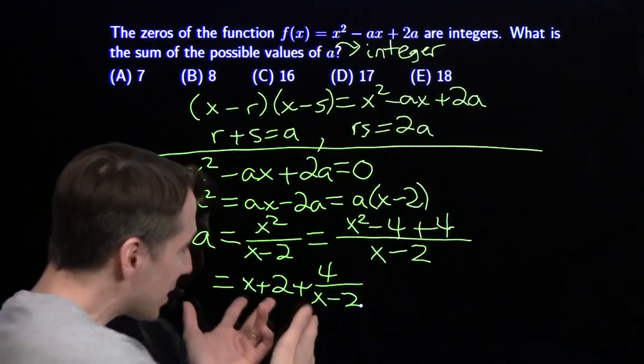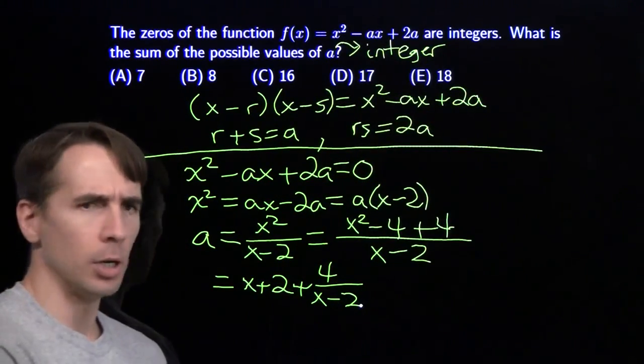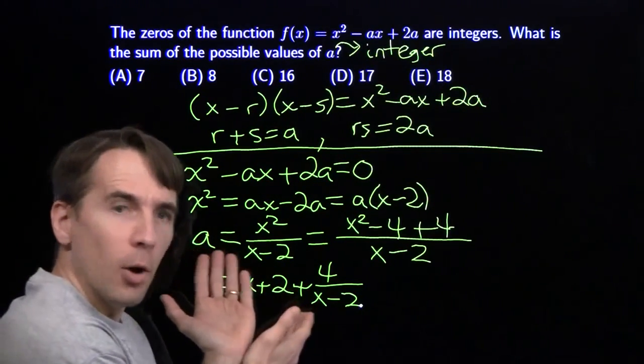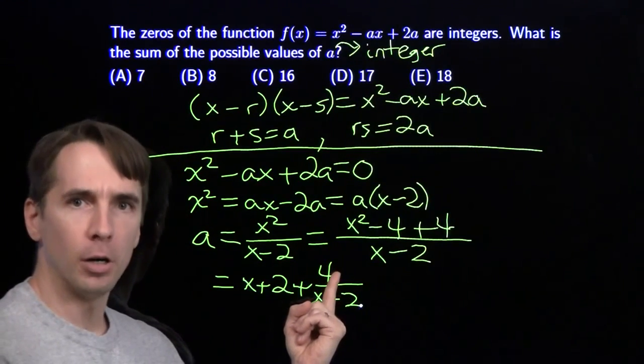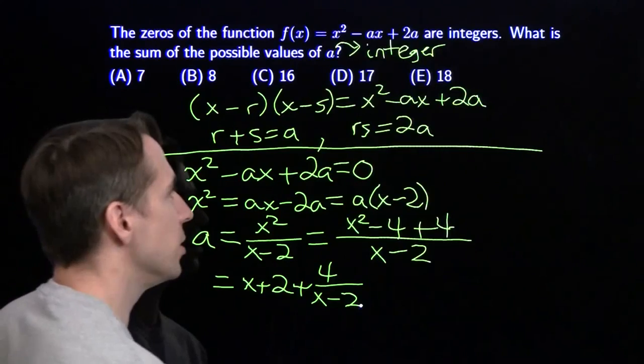We know x has to be an integer because the zeros are integers, and a has to be an integer. So when can both be integers? Only when x - 2 evenly divides 4. Now I just have to look at the factors of 4.